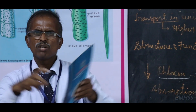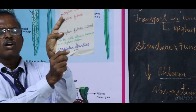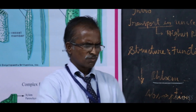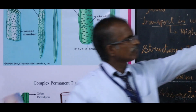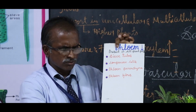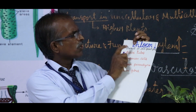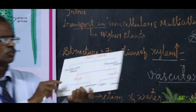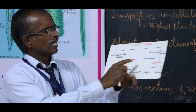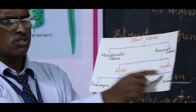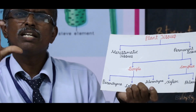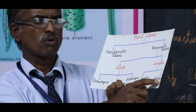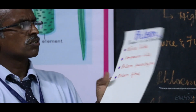Xylem and phloem always bundle together - that is why we call it a vascular bundle. Phloem - the downward arrow indicates food is prepared in the leaves and from the leaves that food goes down to the tip of the root. Phloem is also composed of complex tissue. Plant tissue is mainly categorized into meristematic tissue and permanent tissue. Permanent tissue is divisible into simple tissue and complex tissue. Simple tissue has only one kind of cells; complex tissue has more than one type of cells - that is xylem and phloem.